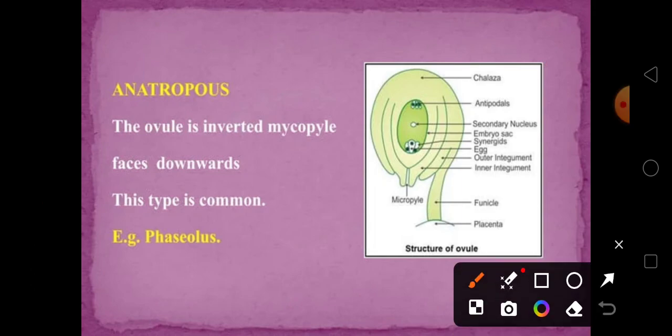Anatropus is the most common type of ovule in most of the plants, where the micropyle is facing downward.